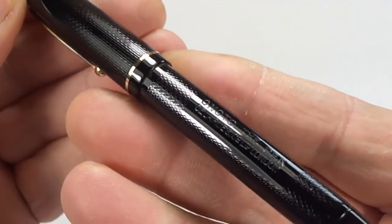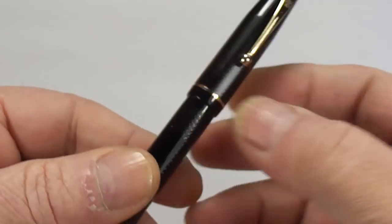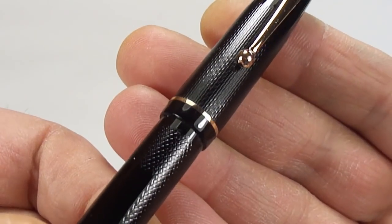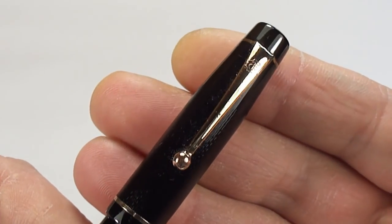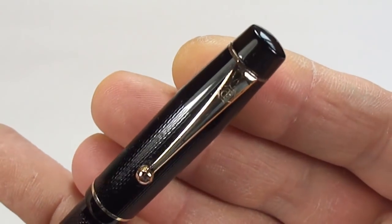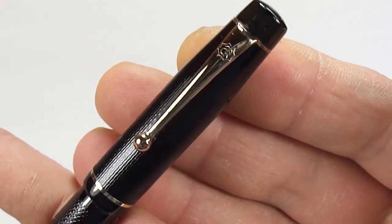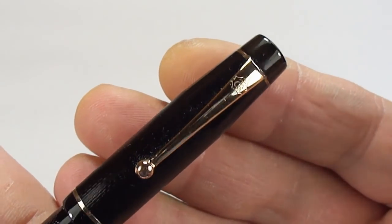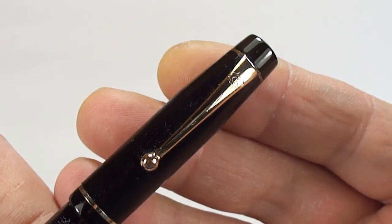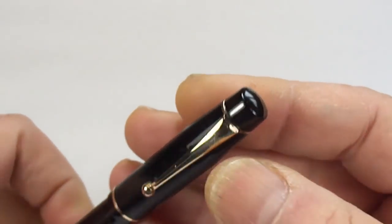You can see it's got this lovely engine turn pattern, gold filled trim, a small gold filled cap band to the bottom of the cap there. The recognizable ball clip from the Anottos and then to the top of the clip there. You can see it's got a little symbol with a T. DR, which means Thomas De La Rue.